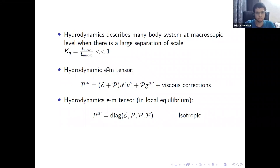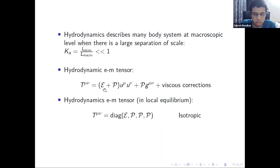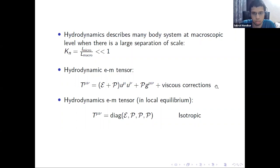The hydrodynamic energy-momentum tensor has the form where the first two terms form the perfect fluid component, and on top of that we have viscous corrections. Here epsilon is the energy density, P is the pressure, U^mu is the velocity of energy flow, and g^{mu nu} is the background metric. The requirement that the Knudsen number be much smaller than 1 is the same as requiring the viscous corrections to be small compared to the perfect fluid part.